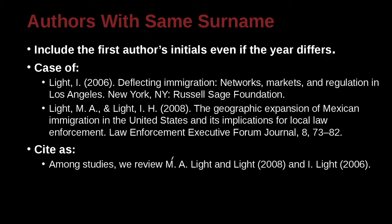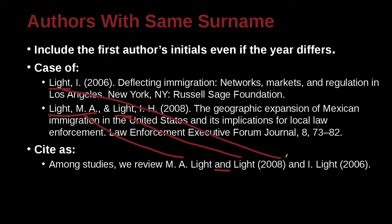So here we have M.A. Light, which is this M.A. Light here. And we have the second person, which is this one. Here we use 'and' because it's outside the parentheses. And then in the second citation, we're citing this Light, who is down here, and we're also including the I.